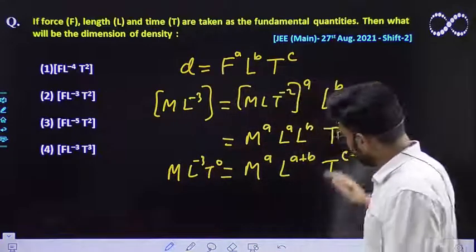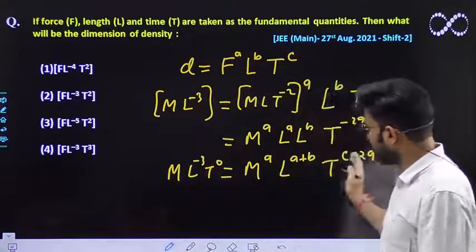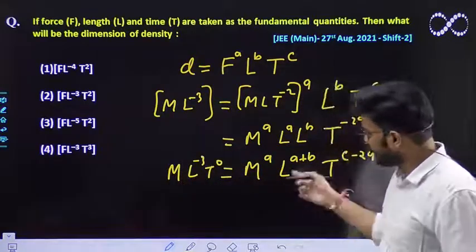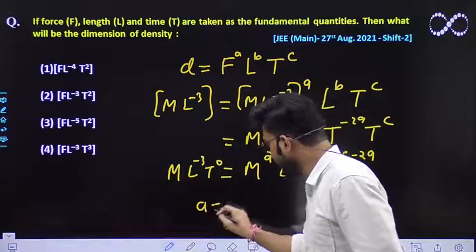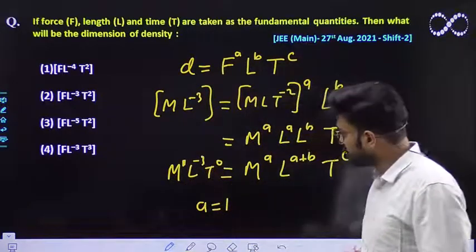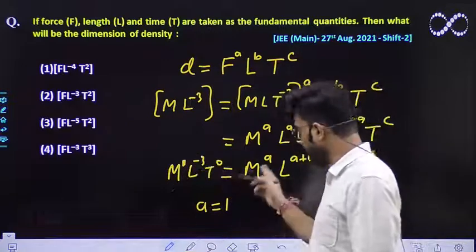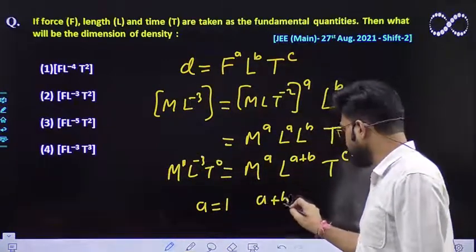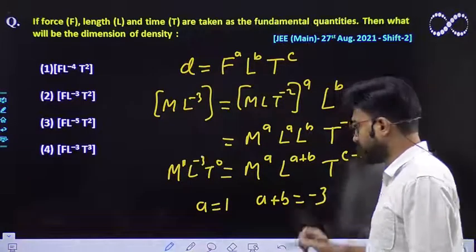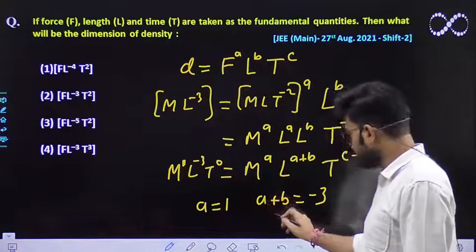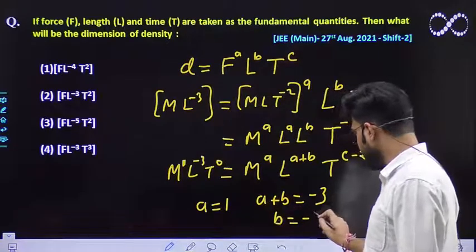So equating the values of A, B, C from this right as well as left hand side. So we will be getting A as 1. Don't you think? Because the power of M was 1. So A must be equal to 1. And what about this? A plus B is equivalent to minus 3. So A is already 1. So B would be equivalent to minus 4.